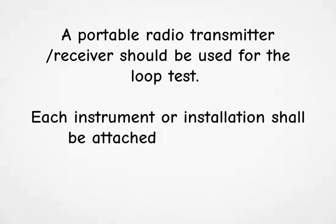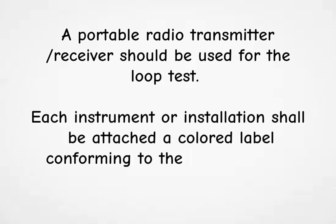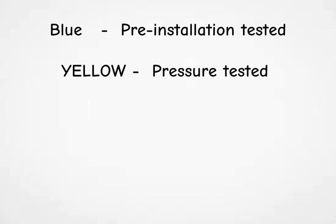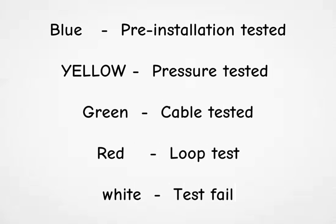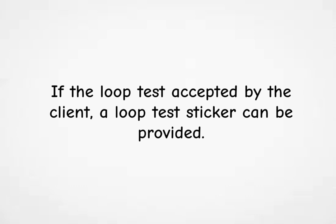Each instrument or installation shall be attached a colored label conforming to the following code: Blue — pre-installation tested; ELO — pressure tested; Green — cable tested; loop test white — test fail. If the loop test is accepted by the client, a loop test sticker can be provided.